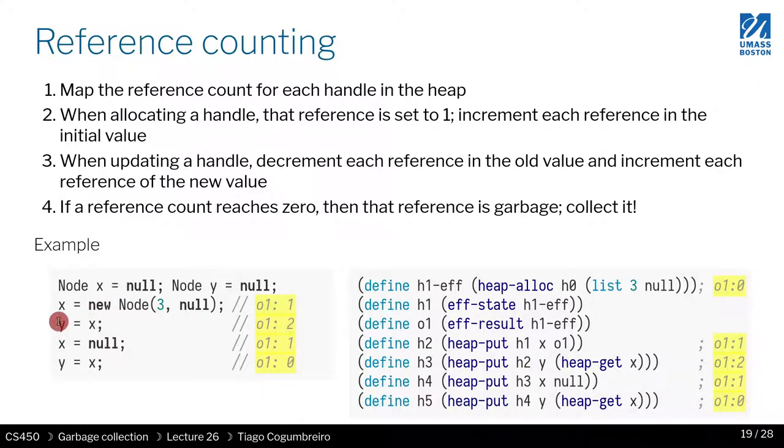In this case, I have a reference y, and I assign x to y. So what that does is it will increment, because I'm referencing, it will increment the counter now to two. If at some point I assign some other value, in this case I'm assigning null, what I'm doing is I'm decrementing the counter by one.